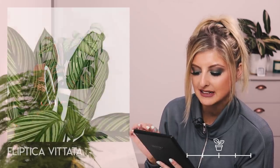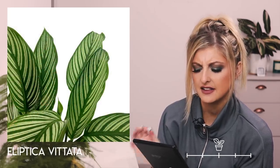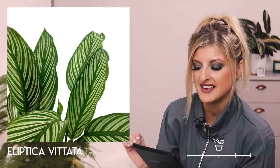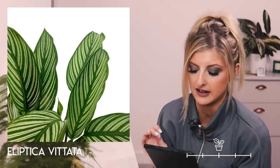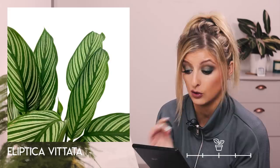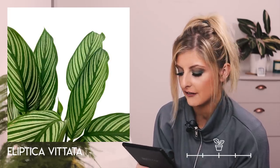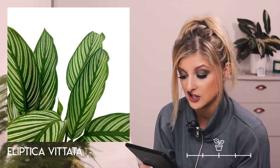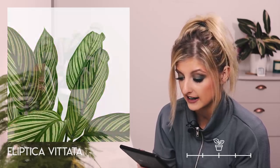Next on Very Rare, we have the Calathea Elliptica Vitata. You will see this is incredibly close to the White Star — however it's totally not the same plant. I've triple checked. The variegation is just not as white from what I can see.